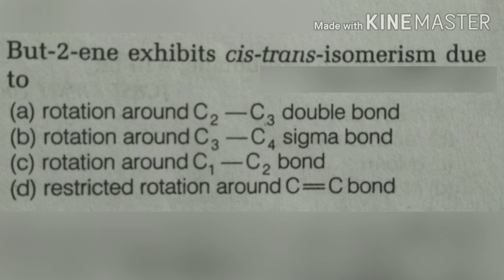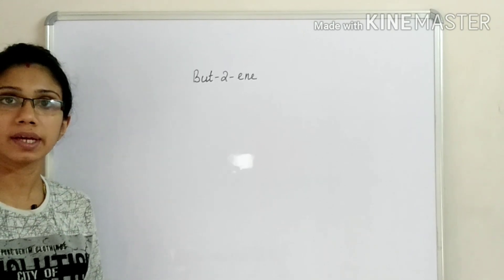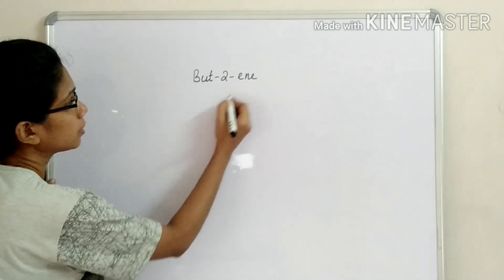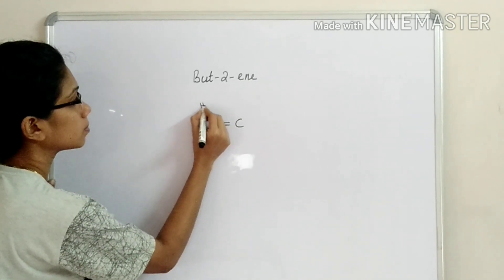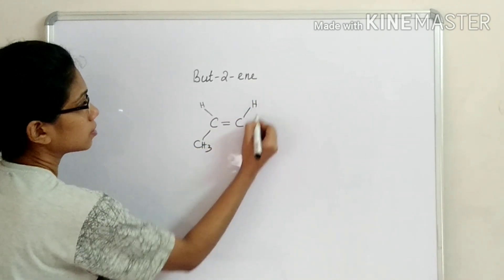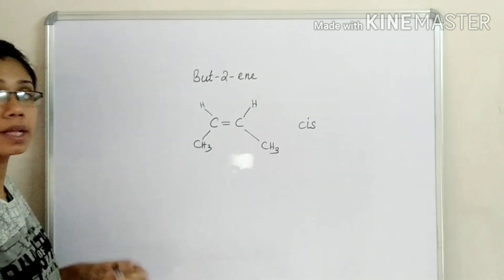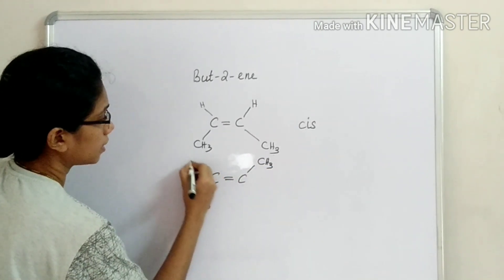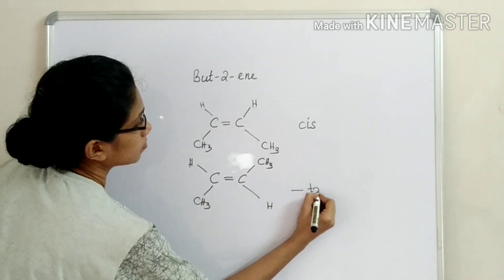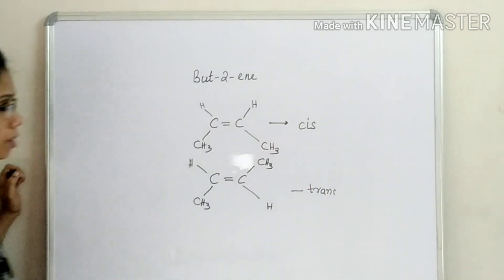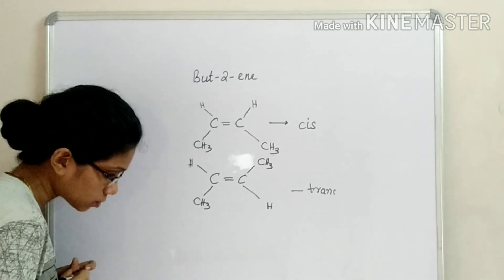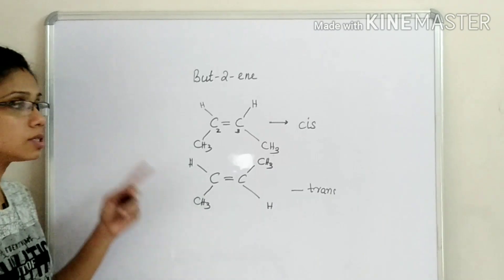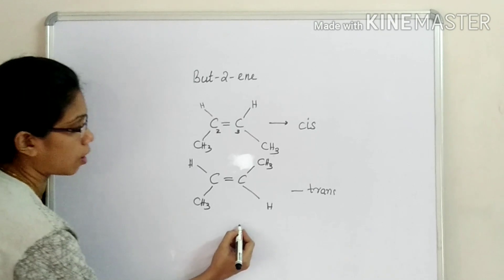Next question: but-2-ene exhibits cis-trans isomerism. What causes cis-trans isomerism? We have a cis-form where similar atoms are on the same side, and a trans-form where similar atoms are on opposite sides. This is due to C2 and C3 — the double bond between C2 and C3. Rotation is not possible; there is restricted rotation around the C=C double bond. Option D.